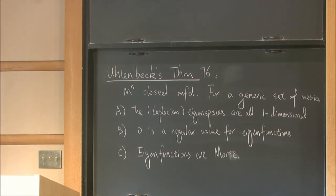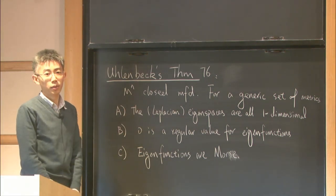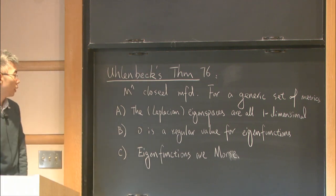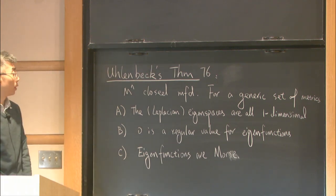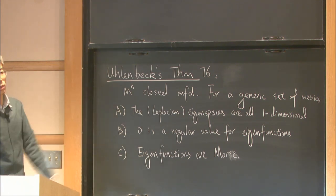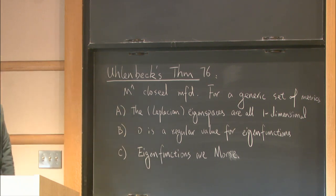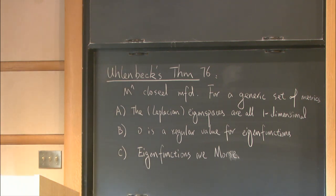Let's state the theorem. Suppose we have an n-dimensional closed manifold. Uhlenbeck proved that for a generic set of Riemannian metrics, the following three properties hold for the Laplacian eigenvalues and eigenfunctions. First, the Laplacian eigenspaces are all one-dimensional, which means that eigenvalues are simple. Second, zero is a regular value for all the eigenfunctions. Third, all the eigenfunctions are Morse, so the critical points are non-degenerate.